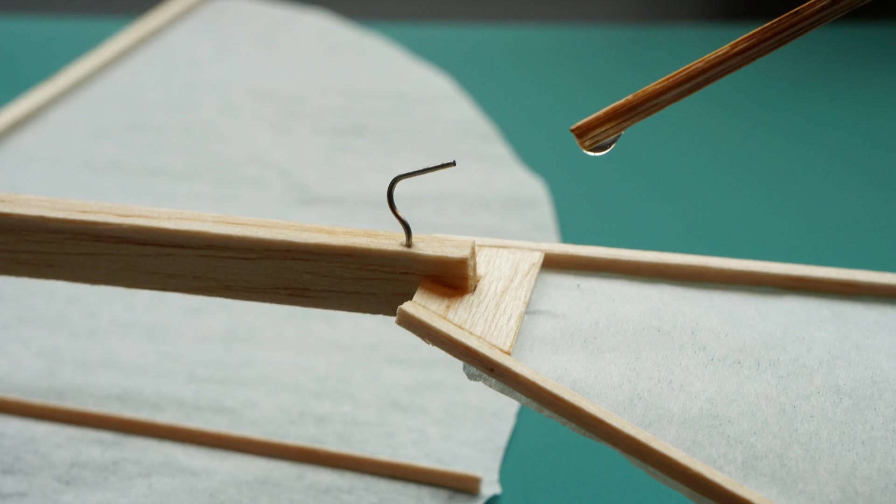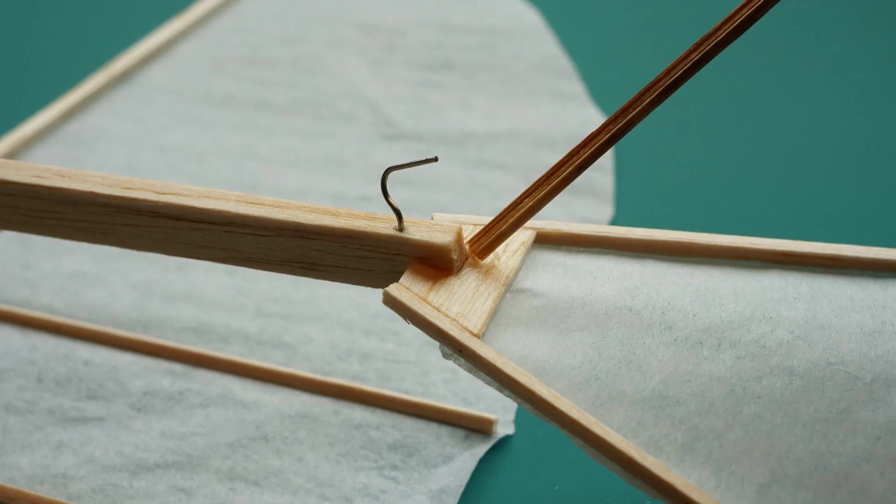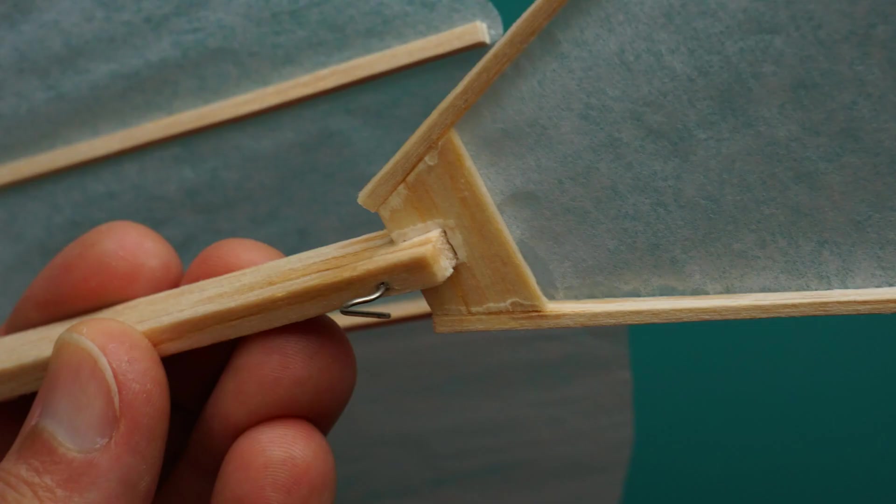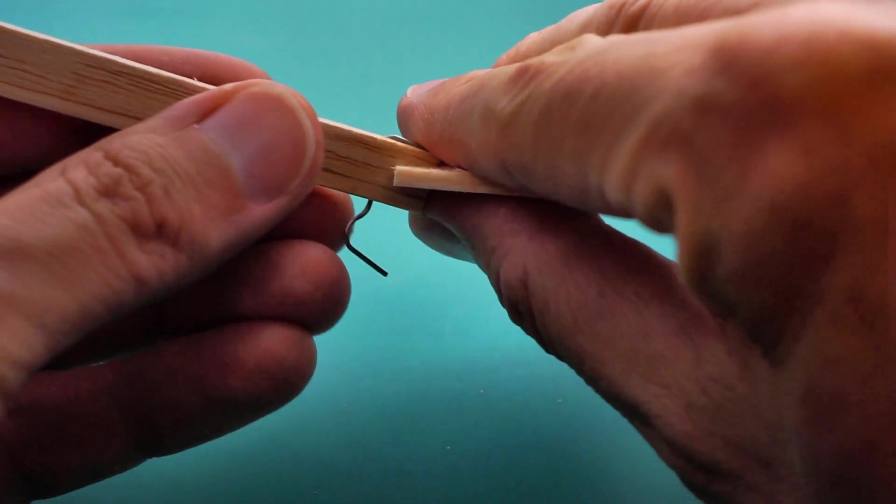If you want to adjust the tail up or down, put a drop of water all around the glue joint, let it sit for a few minutes. You'll see the glue turns white and then you'll be able to adjust it up and down gently.